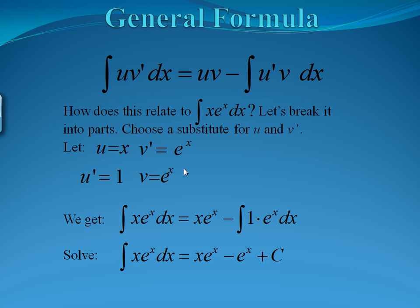The general formula looks like this: the integral of u·v' dx equals u times v minus the integral of u'·v dx. When we have an integral with two different types of functions multiplied together, we're going to pick one to be u and one to be v', and then use this formula.